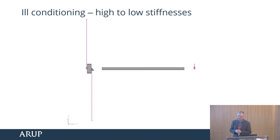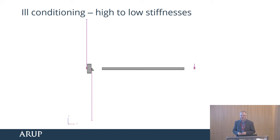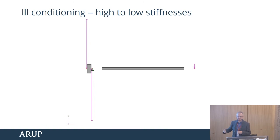Likewise, very long elements with very low stiffnesses, or even worse, zero stiffnesses, can cause huge problems. You sometimes see models where people have added zero stiffnesses to try and release things, and that can cause major issues. There are usually ways the program can allow you to add zero stiffnesses in a controlled manner, but if you add a zero axial cross-sectional area or something like that, you'll run into problems very quickly.